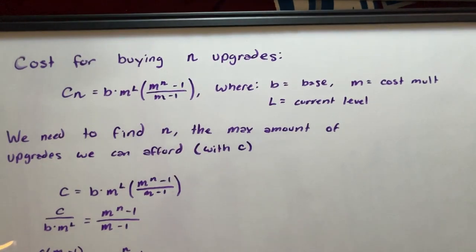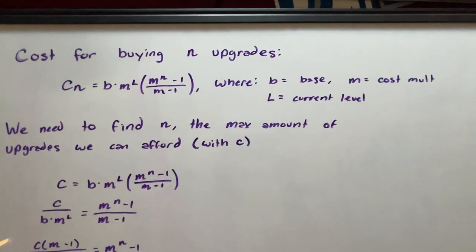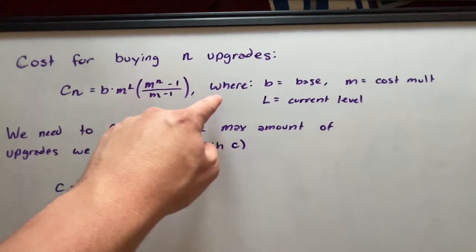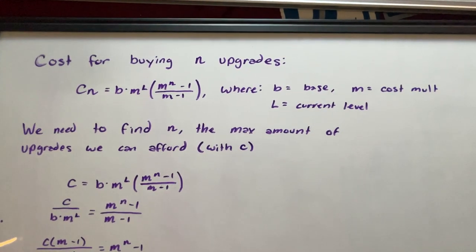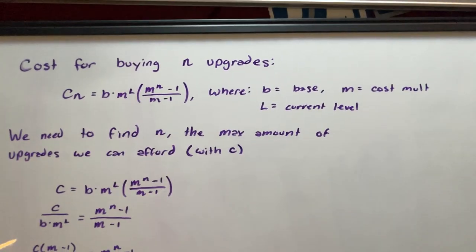Just to remind you guys that the cost for buying n amount of upgrades is this equation right here, where b is equal to the base cost, m is equal to cost mult, and l is equal to the current level. And n is how many upgrades we're buying.